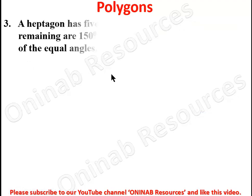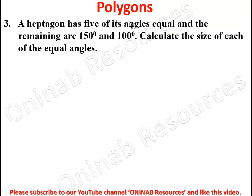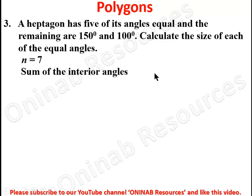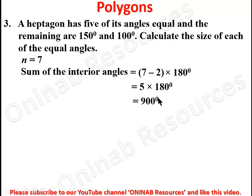Problem 3: a heptagon has five of its angles equal and the remaining two are 150 degrees and 100 degrees. Calculate the size of each of the equal angles. A heptagon has 7 sides, so n equals 7. The sum of the interior angles will be 7 minus 2 multiplied by 180 degrees, which is 5 times 180, giving 900 degrees.